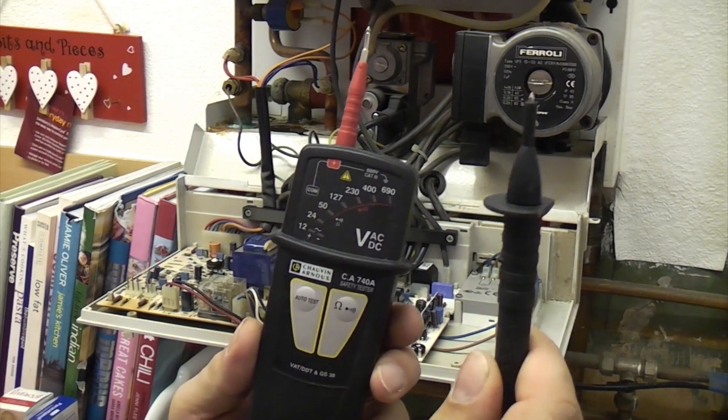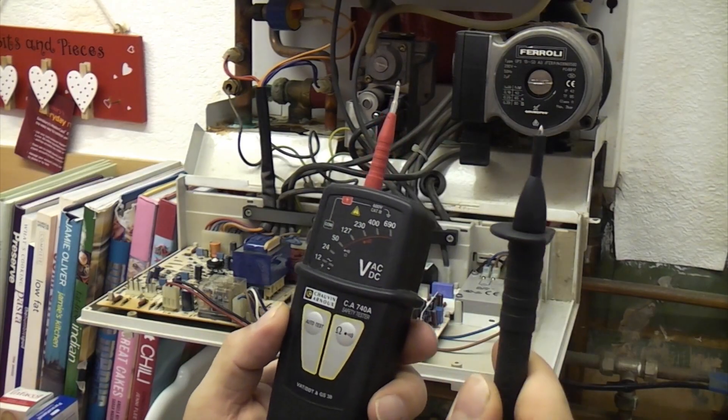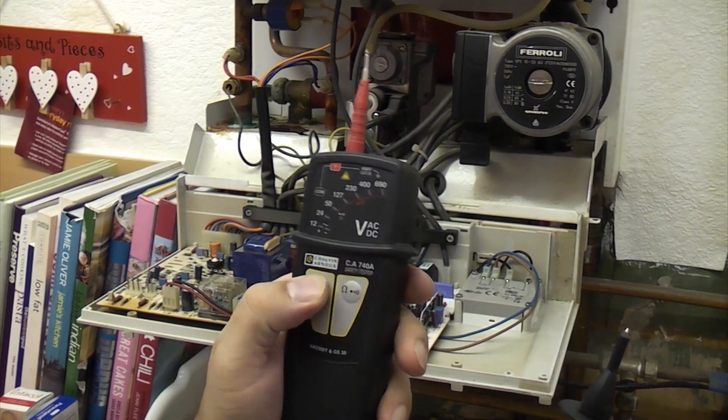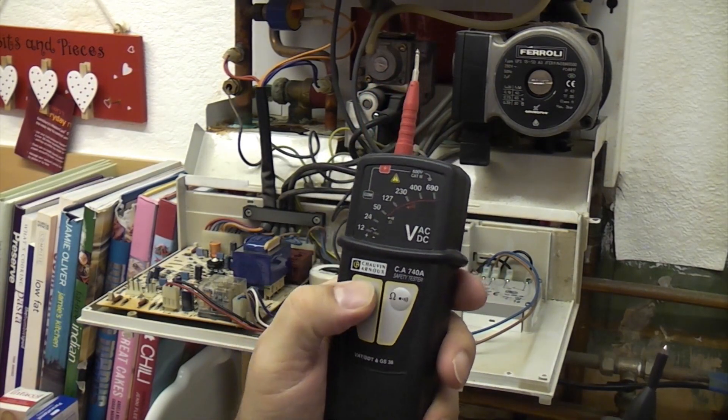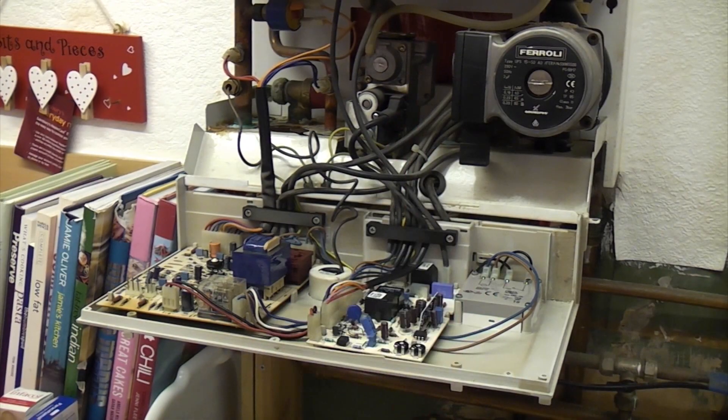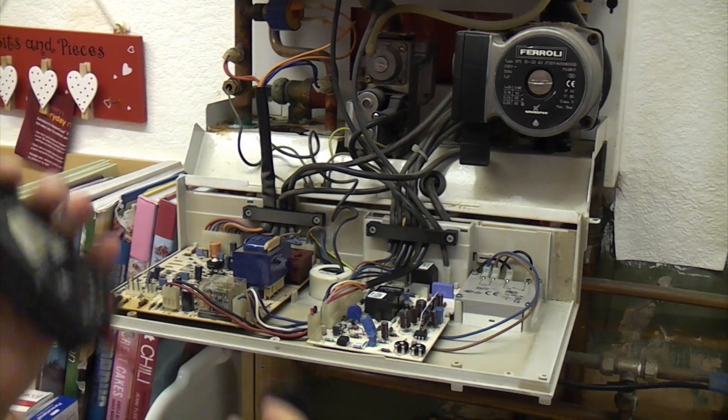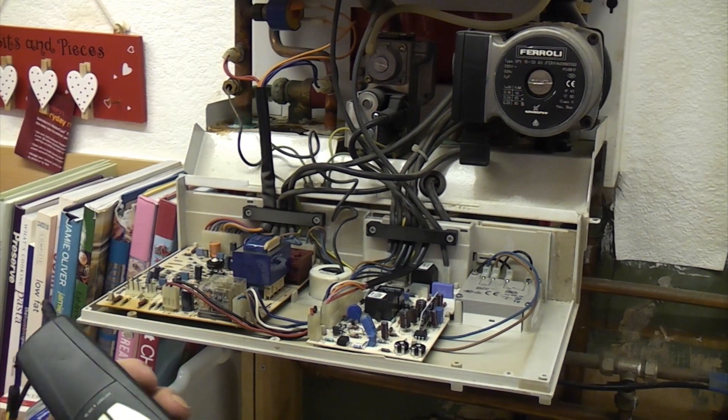And then before we do anything else, we are just going to get our approved voltage checker, and we are just going to test its working by pressing the test button, and then we are just going to check a couple of places on the boiler to ensure that it is completely dead.